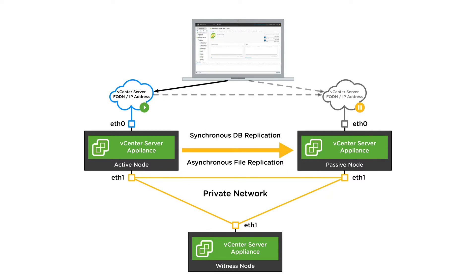There are a few types of replication occurring in this vCenter HA cluster. We have synchronous replication occurring between the active and the passive node to replicate the database writes. This uses the native PostgreSQL replication mechanisms built into PostgreSQL. We also have an asynchronous file-based replication that uses RSync, which consists of files that live outside the database,